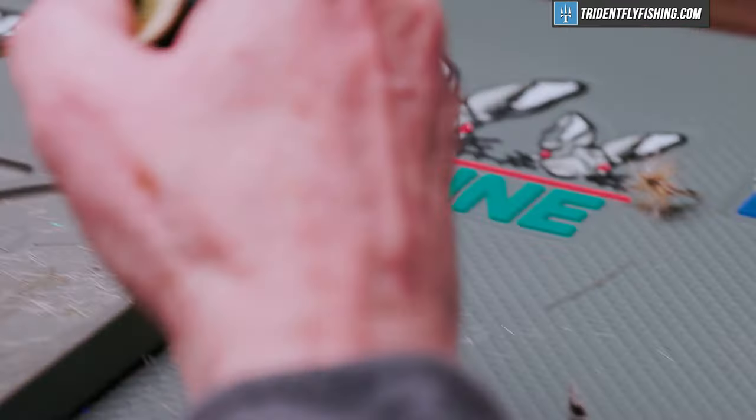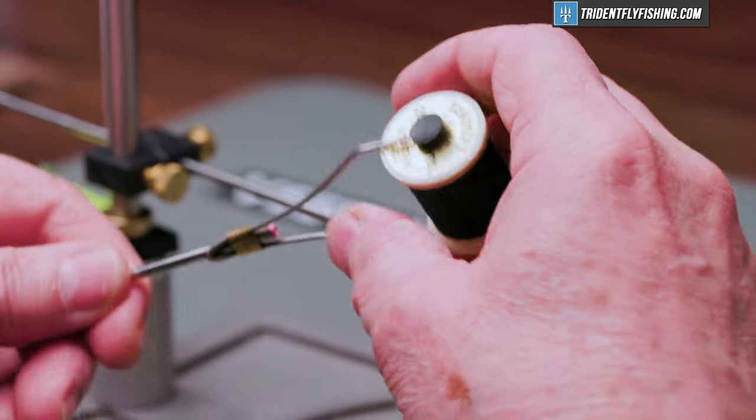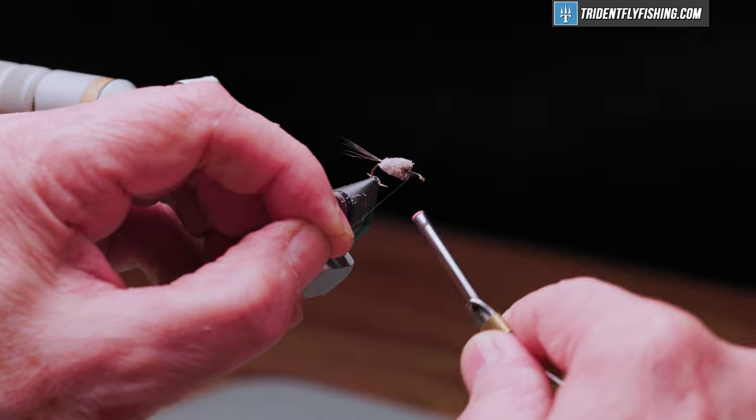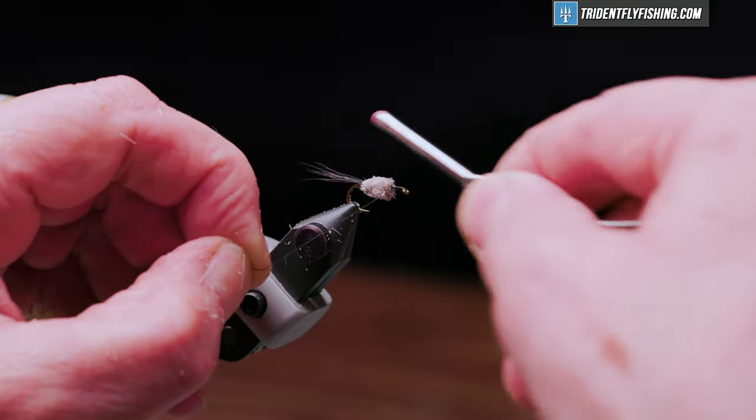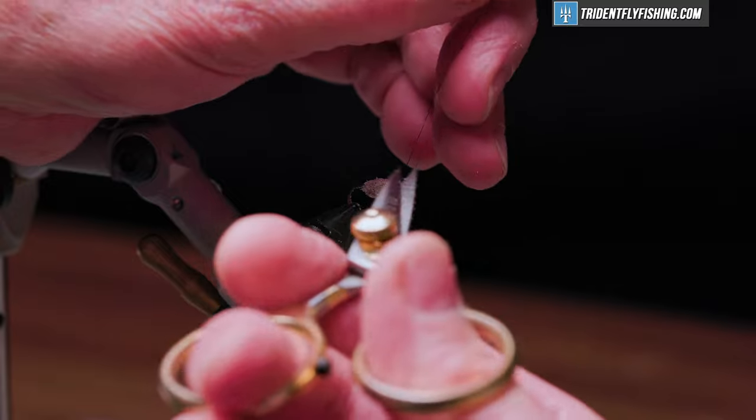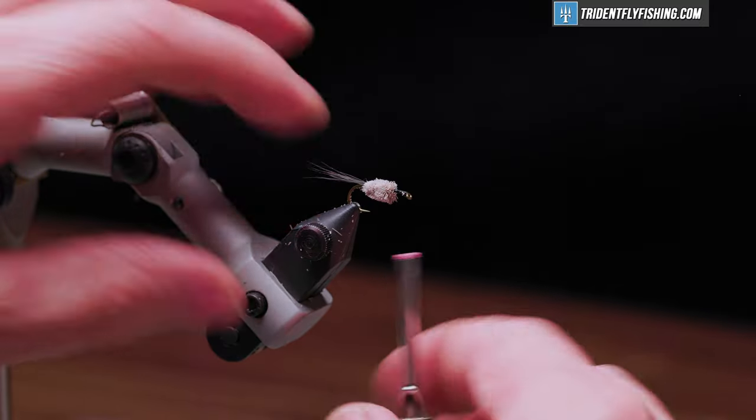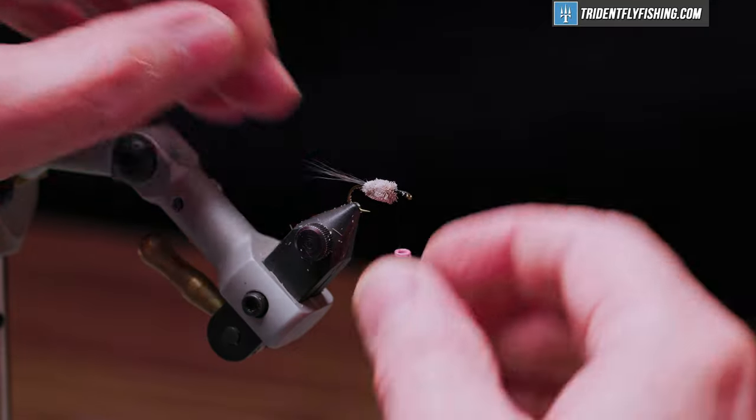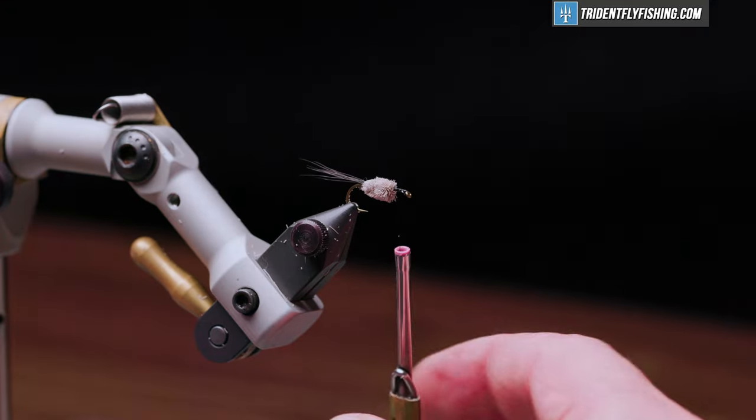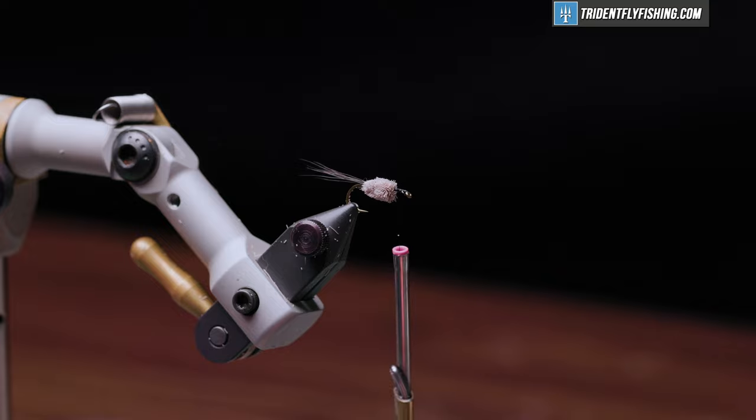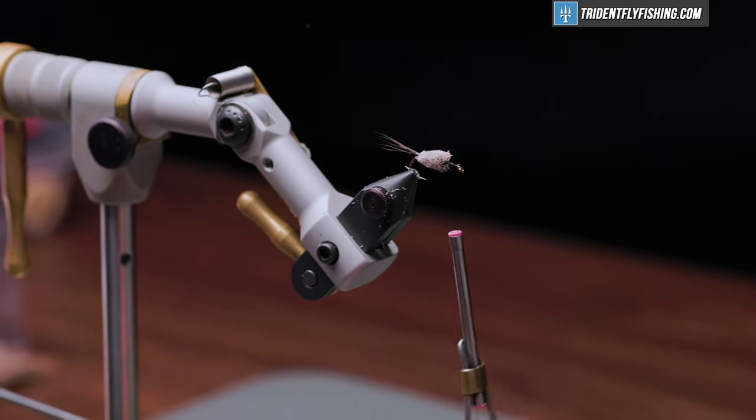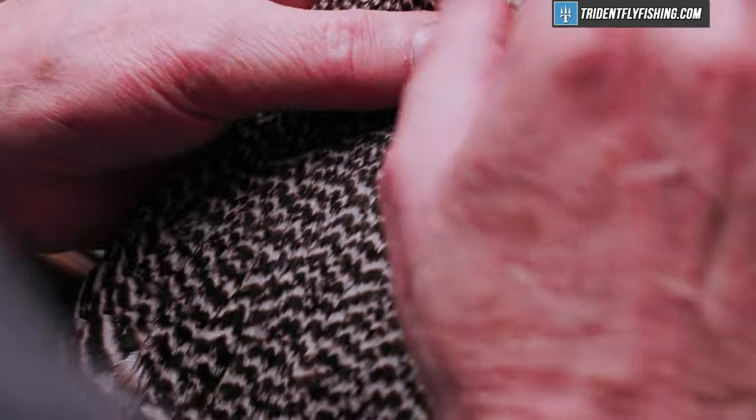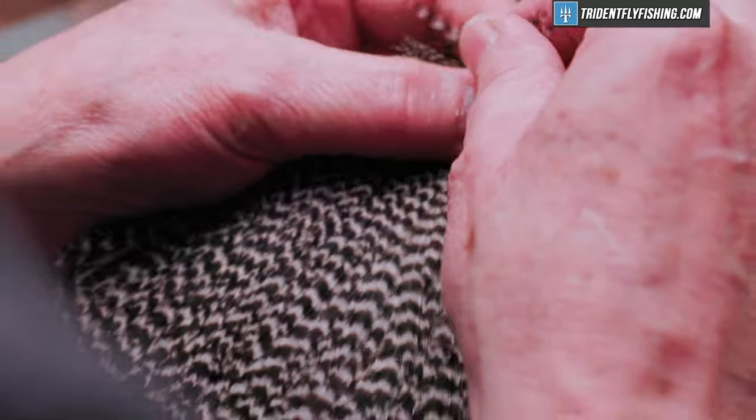I think that will fish. Okay, next we're going to tie in some Danville's 6-Ought Flymaster in black and we'll form a jam knot. I use the two types of thread because the gel spun I can really bear down on that deer hair and not worry about breaking my thread. And the wing is just going to be some hen hackle feathers, so we'll pick a couple out.